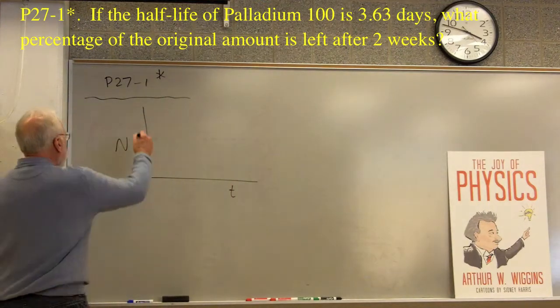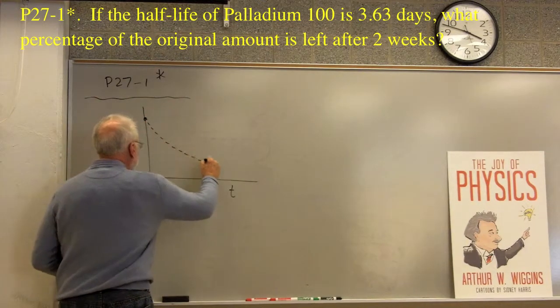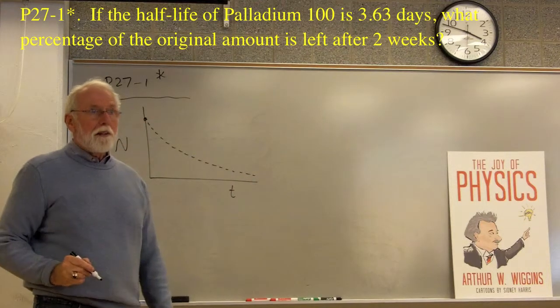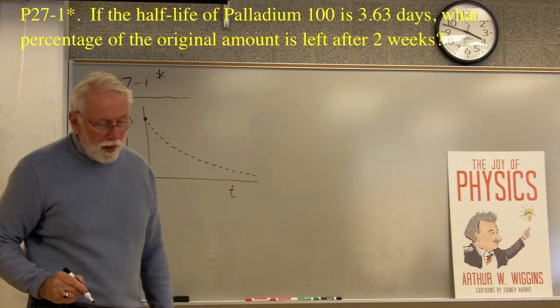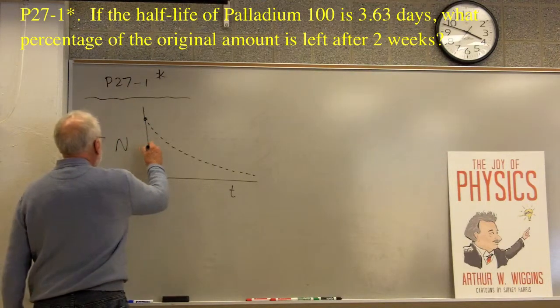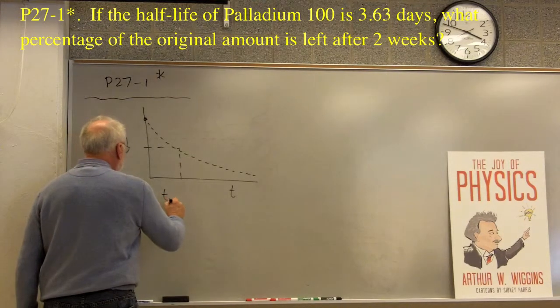So, what happens is it starts out being some particular number, and then it diminishes like this. And so, as it goes down like so, there's the way this is decaying, and the point where half of the original sample is left is the thing that's called the half-life.